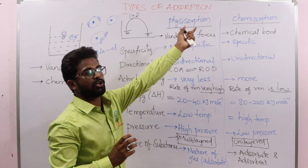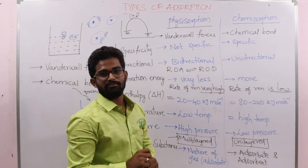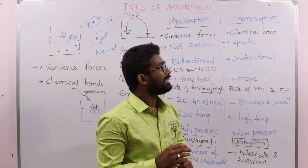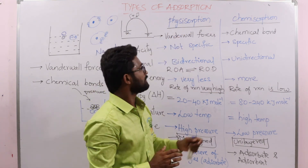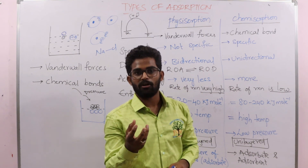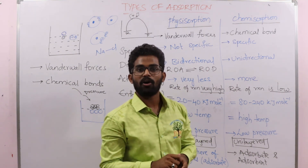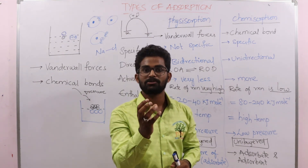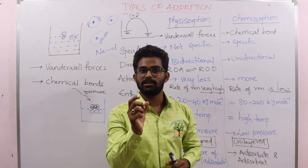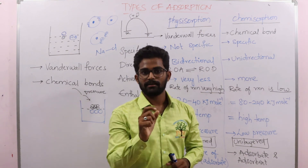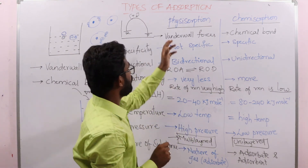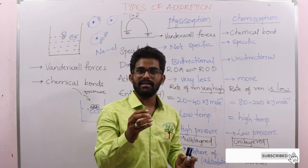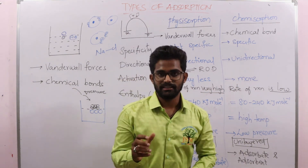To give examples: the adsorption of hydrogen onto animal charcoal is a physisorption process, as hydrogen molecules are adsorbed by disturbing electronic distribution. The adsorption of hydrogen onto nickel or platinum metals is a chemisorption process, because it involves formation of nickel hydride, a chemical bond. Thank you.